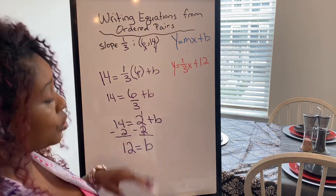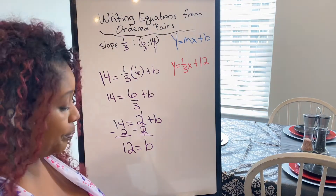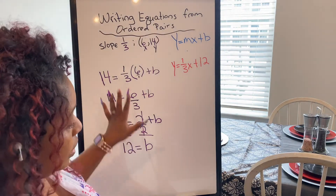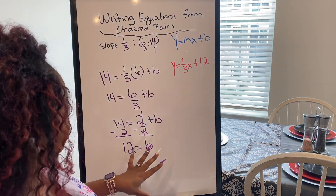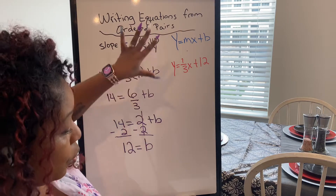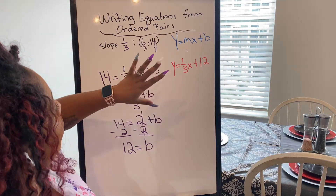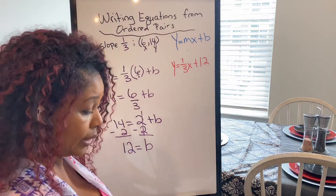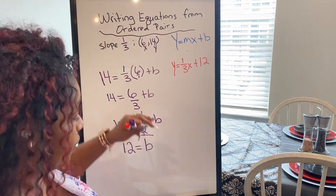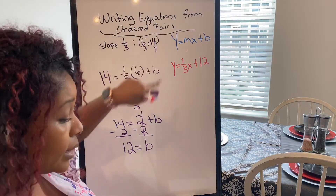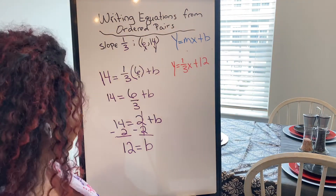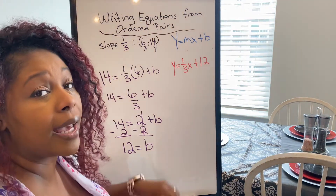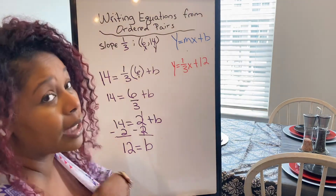That is how you solve this. So that's what you do when they've given you the slope and they've given you one set of points. Now we're going to look at what happens when you have two sets of points and no slope.